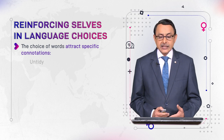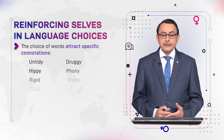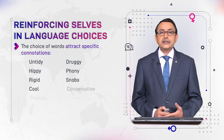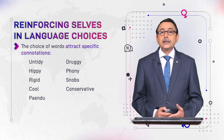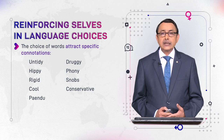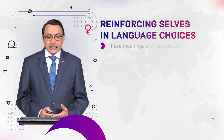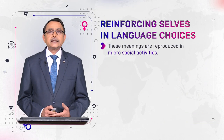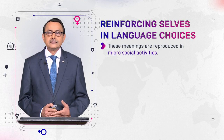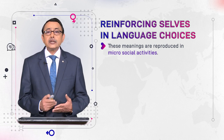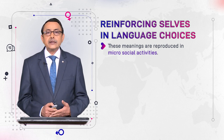For example, such meanings include: untidy, druggie, hippie, rigid, snob, cool, conservative, or terms like 'pai' and 'do' in Punjabi. These meanings are reproduced — they are repeated over time and come into use again and again. This is what we mean by reproduced.